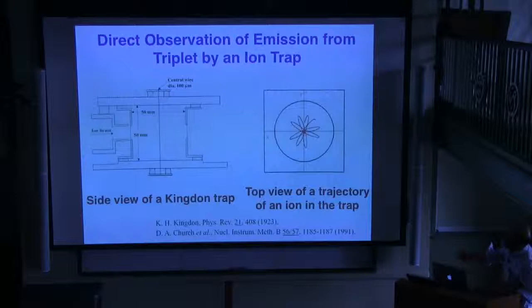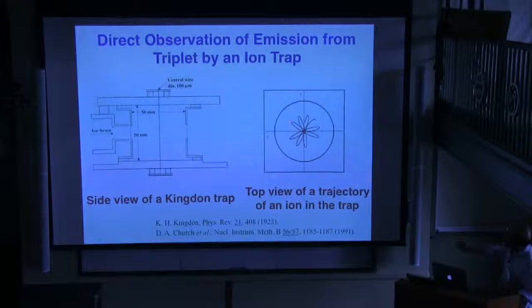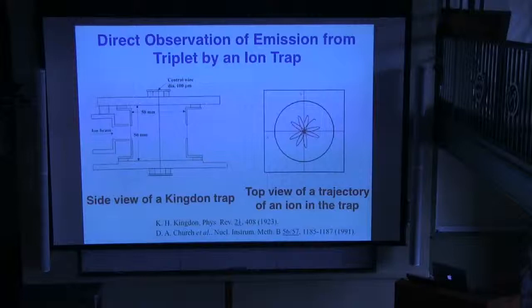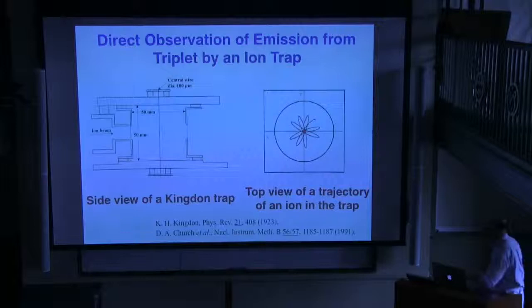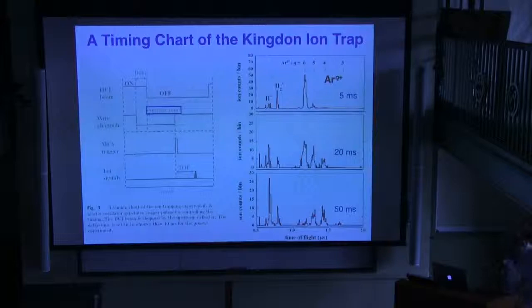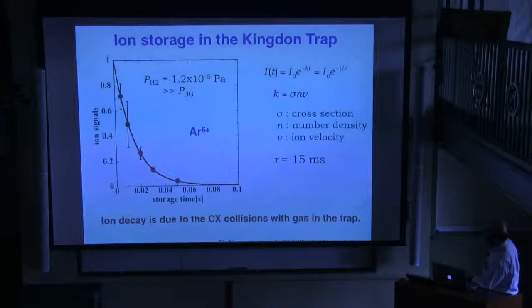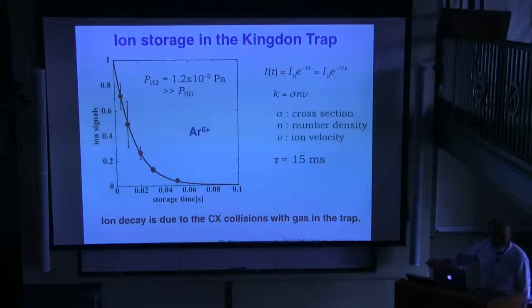After consideration, we introduced a Kingdon trap — a device with a long history. It is very simple: just a wire in the center of an electrode. In the top view, ions circulate with several kinds of possible motion, but have no chance of hitting the center wire if the wire voltage is lower than the electrode voltage. We recently developed a Kingdon trap in our lab, and our publication was published in the Review of Scientific Instruments last year.